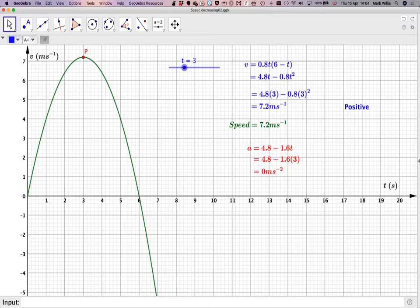Then the next value we need to look at was when we were at 5, so at this particular part of the graph, the velocity is still positive, but the acceleration is negative. So we've got positive, negative, that means that the speed will be decreasing.